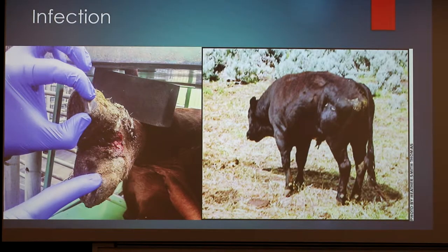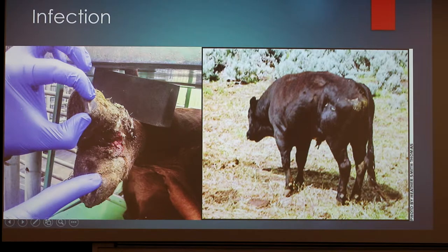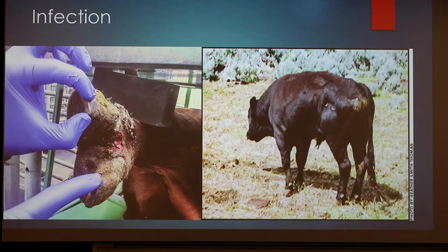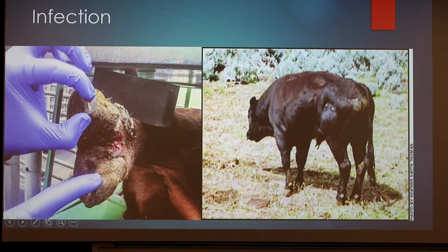This is what foot rot looks like. On the left is a veterinarian spreading the lateral claw apart, and you can see right inside there is infection and scarring starting to happen. On the right, comparing that to the healthy cow — you can tell this cow is leaning and favoring its front left foot, trying to get weight off of it, which is really bad, especially if you're in a packed stockyard with a lot of feeder calves. That can be a really big issue.